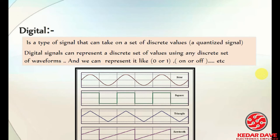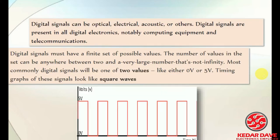Digital signals include types such as sine, square, and triangle waves. The square wave represents 0 volts and 5 volts — between these values no other values will exist. Only 0 or 5 volts exist in a digital signal.